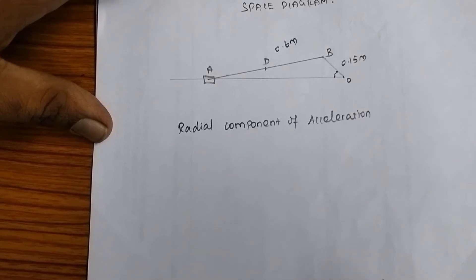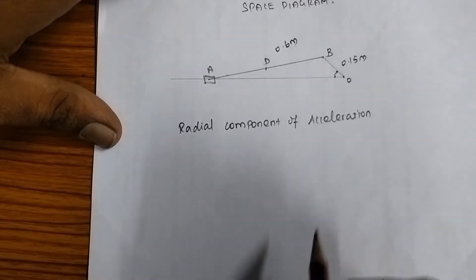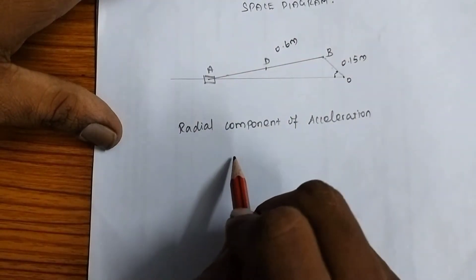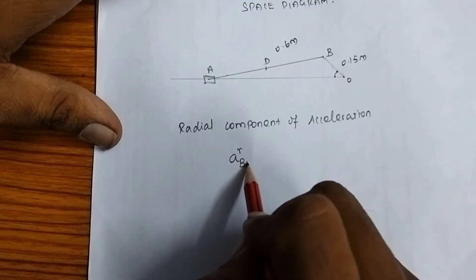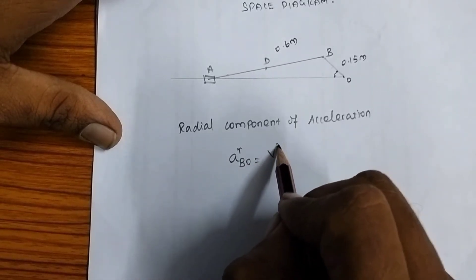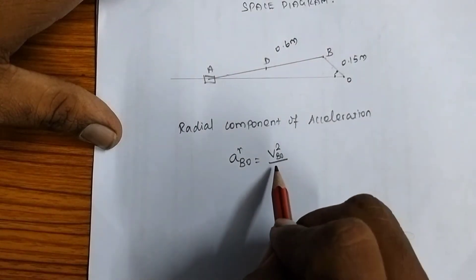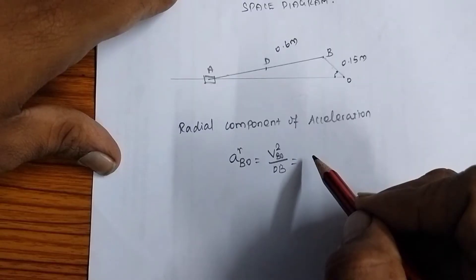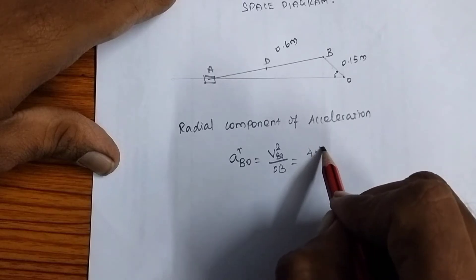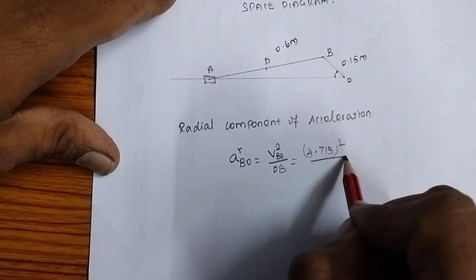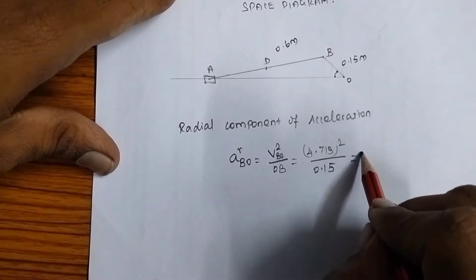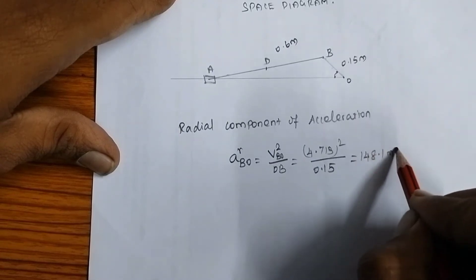For the acceleration diagram: the radial component of acceleration of rotating link OB equals V_BO² / length OB = (4.713)² / 0.15 = 148.1 m/s². The radial component of acceleration of connecting rod AB equals V_AB² / length AB = (3.4)² / 0.6 = 19.3 m/s².